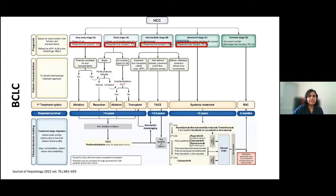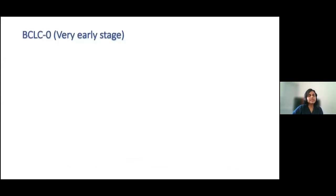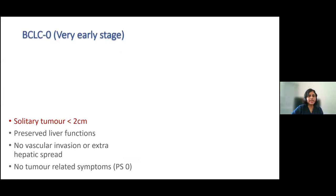From early, very early stage BCLC 0 to advanced stage BCLC C, all of these require preserved liver function as a requirement for treatment. With terminal stage and advanced liver disease, the prognosis is very poor. BCLC 0 — the very early stage — is a solitary tumor less than two centimeters with preserved liver function, no vascular invasion, no extra-hepatic spread, no tumor-related symptoms, and performance status 0.